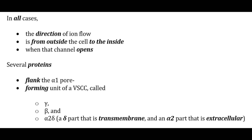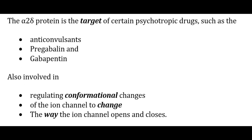In all cases, the direction of ion flow is from outside of the cell to the inside when the channel is open. Now several proteins flank the alpha pore-forming unit of the calcium channels, called the gamma, beta, and alpha 2 delta, in which the delta part is transmembrane and the alpha 2 part is extracellular. The alpha 2 delta protein is targeted by many psychotropic drugs such as the anticonvulsants pregabalin and gabapentin. These are also involved in regulating the conformational changes of the ion channel to change the way the ion channel opens and closes.